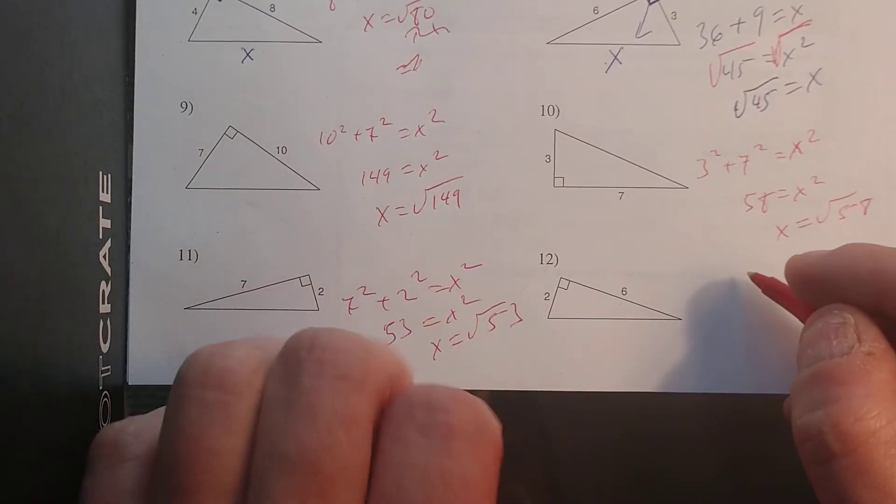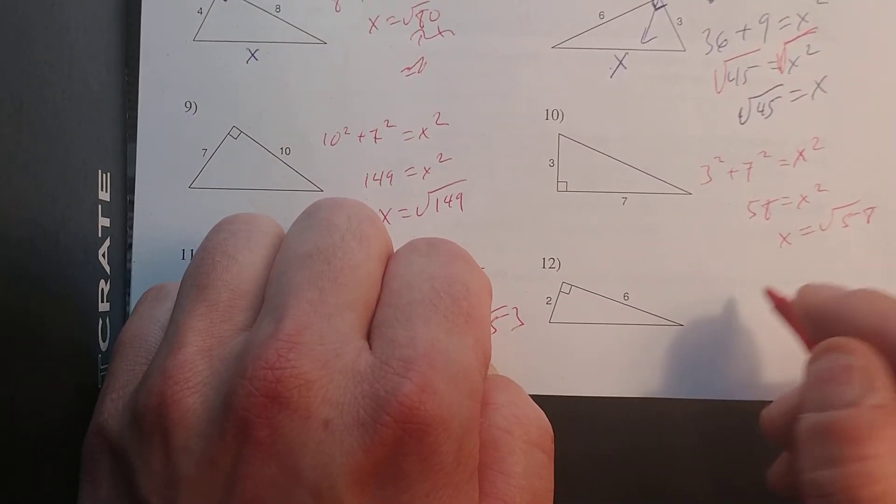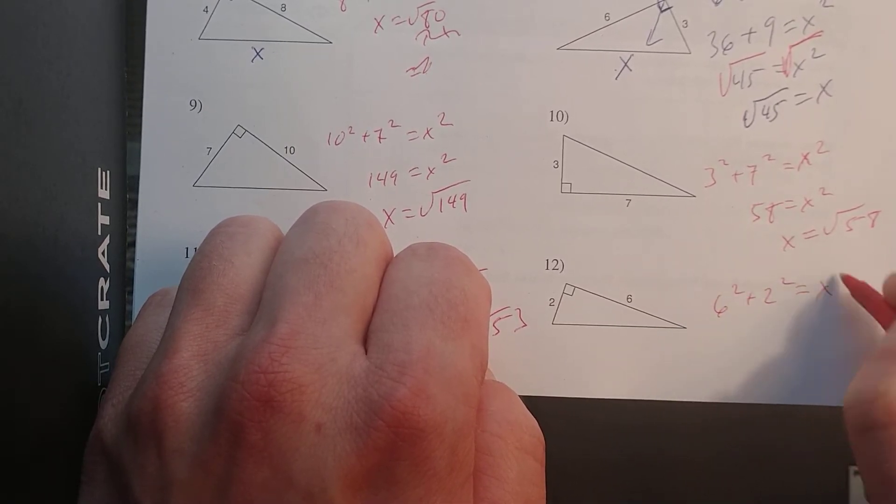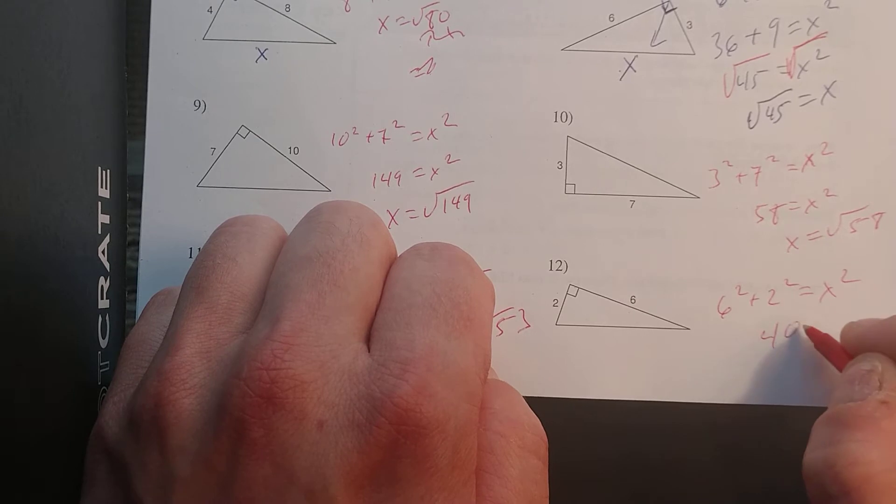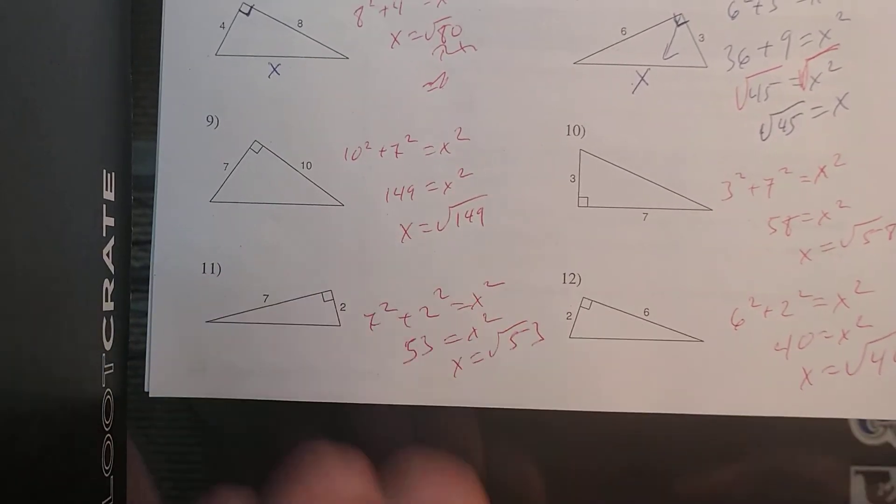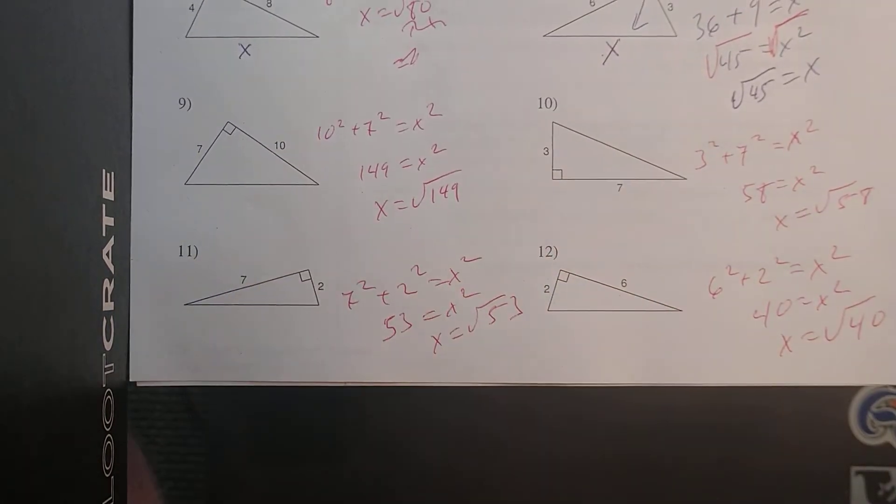And the last one, 12, your setup should have been 6² + 2² = X². So 36 and 4 is 40. So X equals the square root of 40.